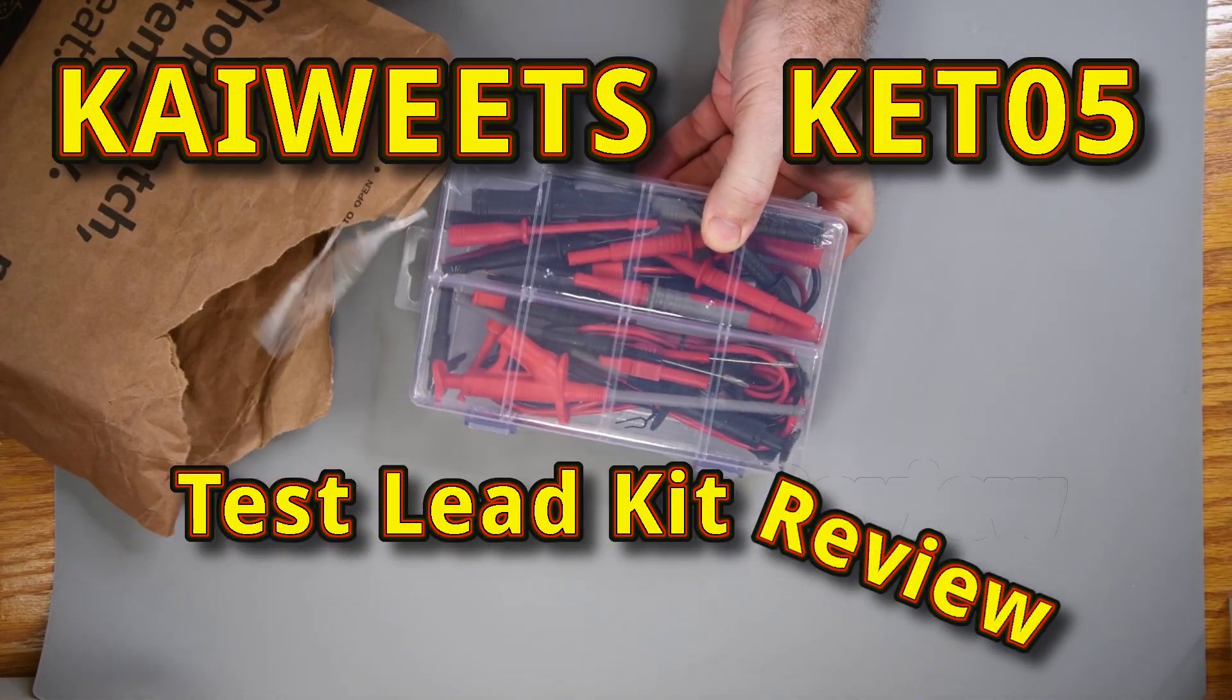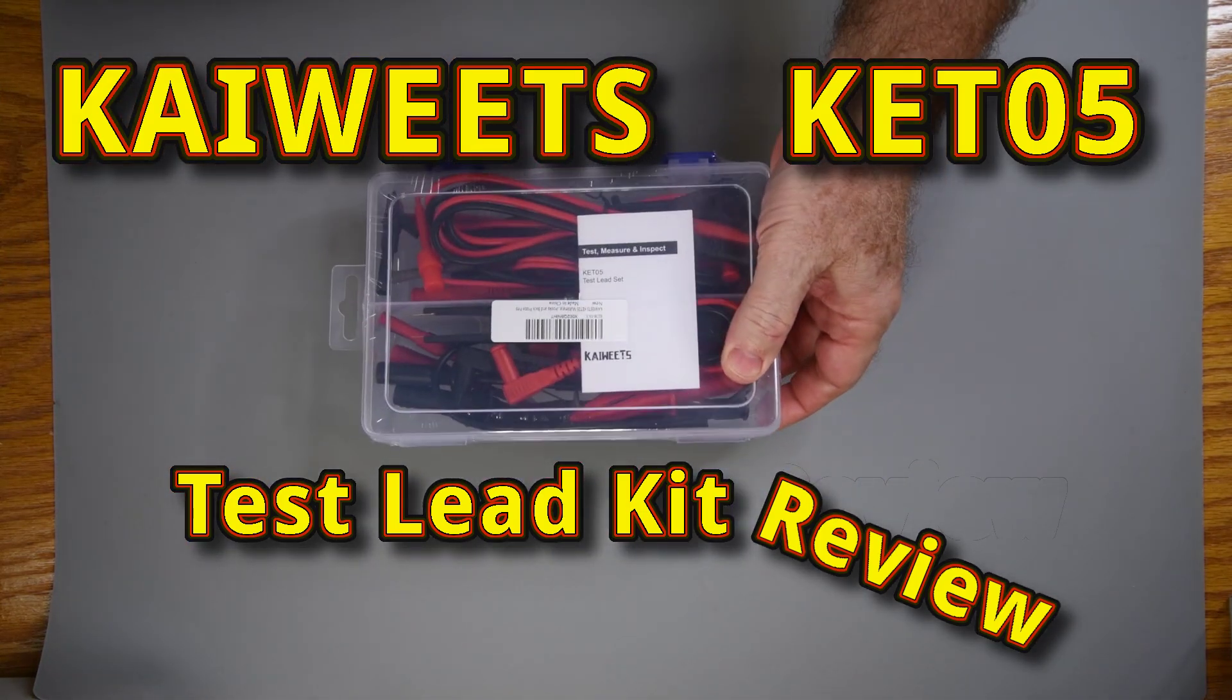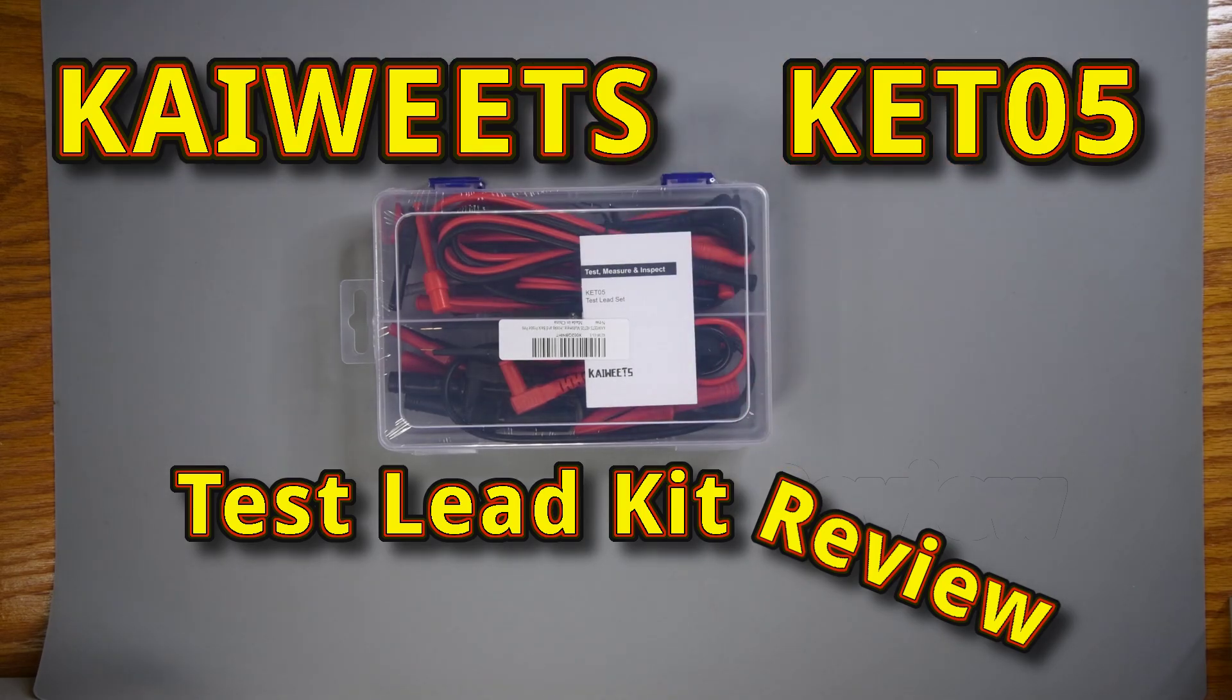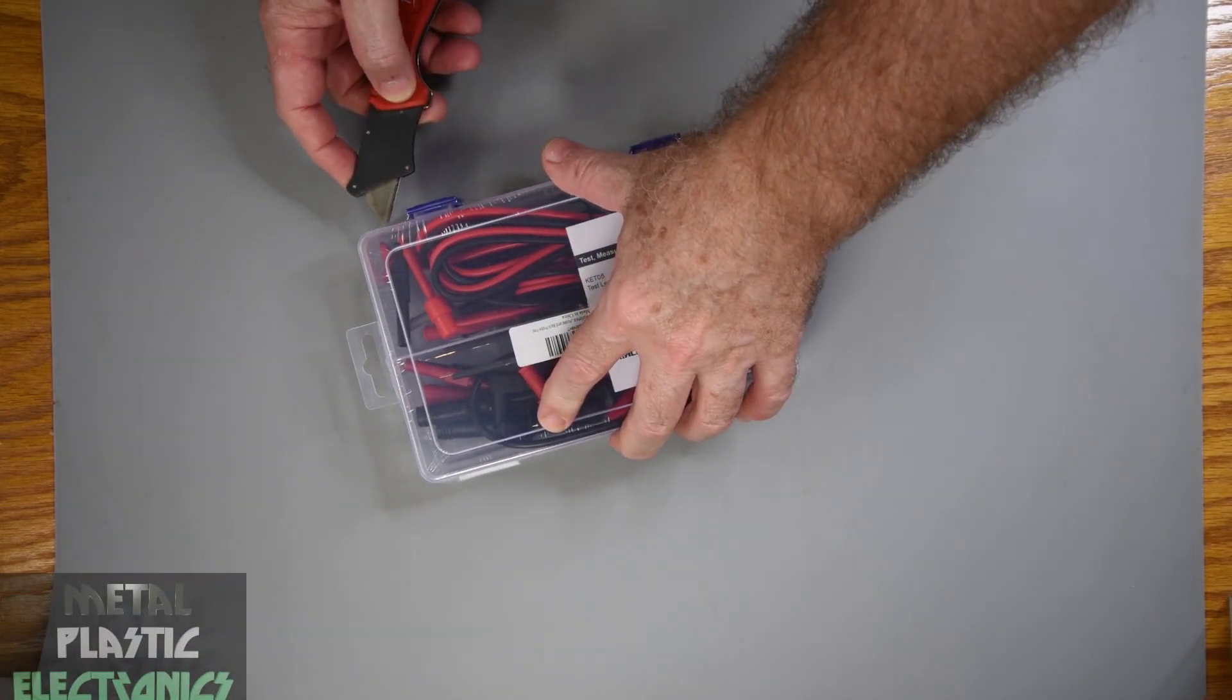I had to get a new test lead set. Had one of my two last Fluke leads go bad. A little over a year ago, I tried the Kaiweets KET-12 kit. It was like $18 and I thought well worth the money. So I ordered the KET-05 from Amazon.